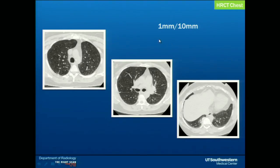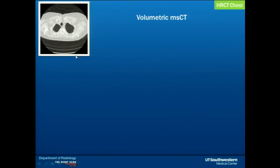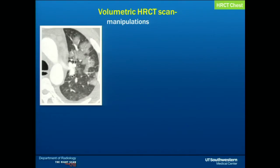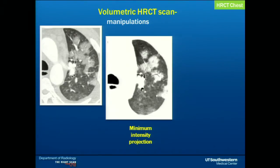This slide shows you have limited images through the lung when using a 10-millimeter interslice gap, whereas with volumetric multi-slice CT you have more lung to see. You can also do multiple manipulations. This patient had lobar pneumonia, and this is a minimum intensity projection image, which highlights pixels that are very low in attenuation, so the areas appear very dark. You can nicely see air bronchograms going into the lobar consolidations.